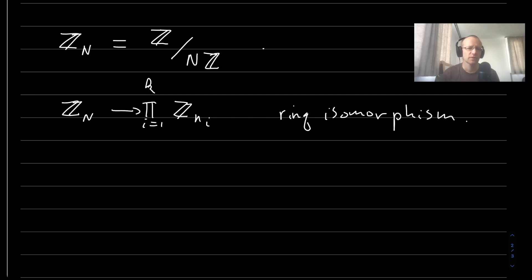And the way this map works is that it maps x mod n to x mod n_1, etc., all the way up to x mod n_k.